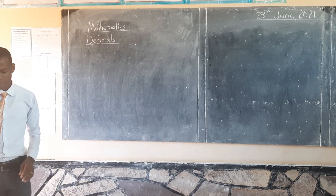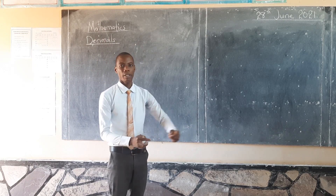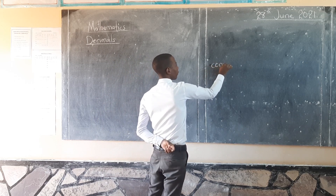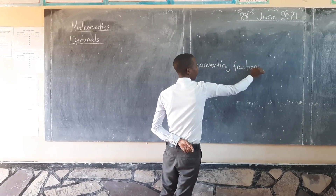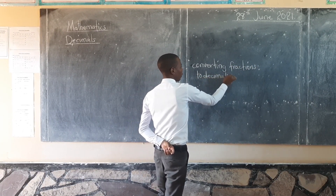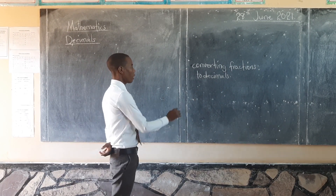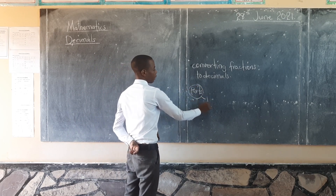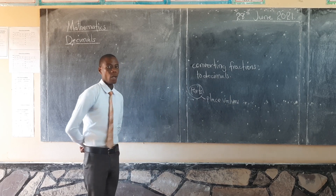Before we look at what I have this morning, I want us to remind one another of what we discussed the last time we met under decimals. We looked at converting fractions to decimals. Under converting fractions to decimals, we said these decimals are parts, and these parts are known as the place values.